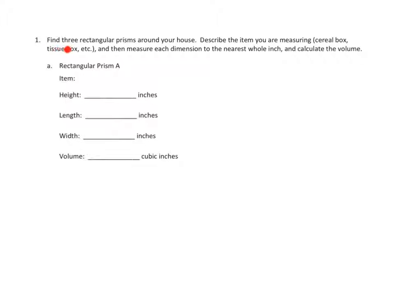We are going to find three rectangular prisms around your house, describe each item you are measuring - cereal box, tissue box, etc. - and then measure each dimension to the nearest whole inch and calculate the volume. So I'm going to go ahead and do that on mine.